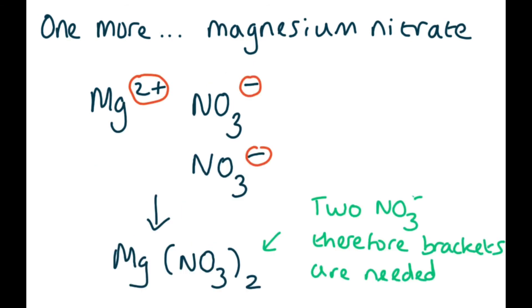If you have magnesium nitrate, you're going to need two nitrate ions. Therefore you're going to need brackets to hold the N and the O together.